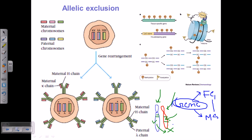This particular phenomenon is beautifully illustrated during the B lymphocyte of our immune system. If you study the B lymphocyte system, you can look for this allelic exclusion as a beautiful example.